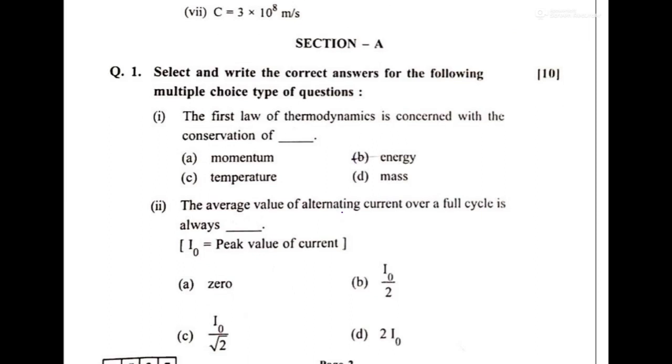The first law of thermodynamics is concerned with the conservation of energy. Then second, the average value of alternating current over a full cycle is zero.